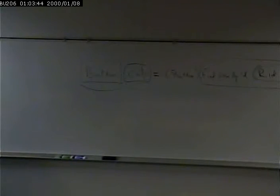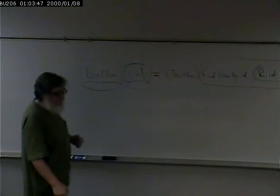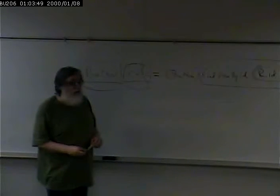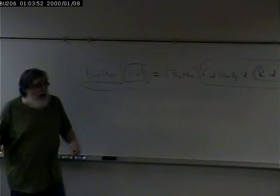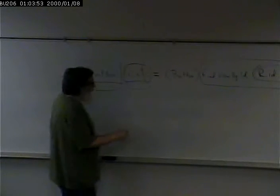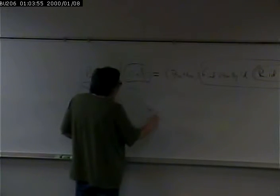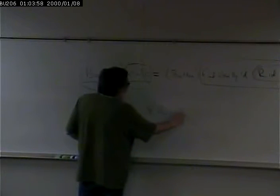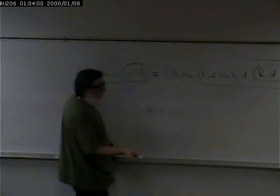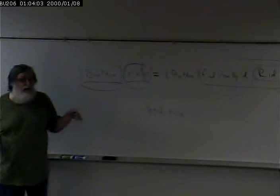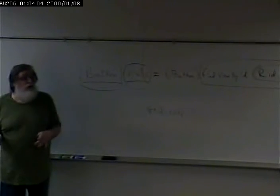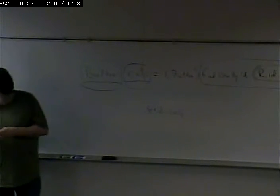The R stands for resource. R.id is the ID, and calc is the name. If you notice in the layout file, it probably had something like app:id=calc — that's saying create an ID for this called calc, and then we can find it.